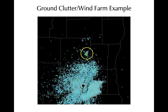Ground clutter is often observed close to a radar and is typically characterized by its radial velocity of zero. Clutter is caused by the beam intersecting objects on the ground and the power returned from that backscatter. This can happen as the beam is moving upward away from the radar or as the beam is super refracted back down to the surface and encounters objects on the ground. This example shows ground clutter located to the north-northeast of the radar with some moderate reflectivity. In this location, the return is persistent in clear air because there's a wind farm, and the echo is caused by the backscatter off of the wind turbines.